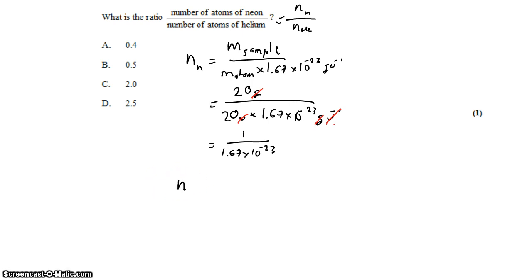Next, we need the number of atoms in helium, and it's the same calculation. We have 8 grams divided by 4 amu for the atom times 1.67 times 10 to the negative 23 grams per amu. And again, amu cancels with amu. Gram cancels with gram. And we get 2 divided by 1.67 times 10 to the negative 23.